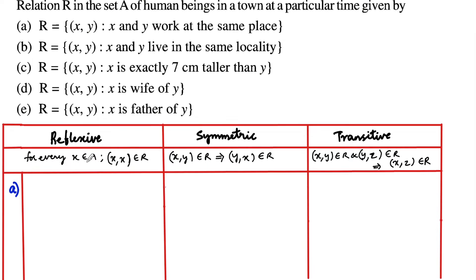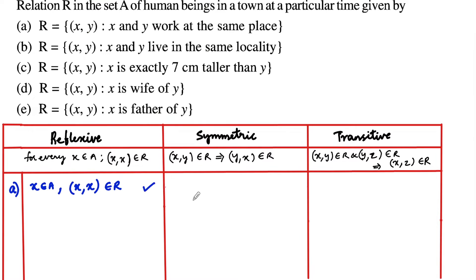Let us check for reflexive. The reflexive condition is: for every x belonging to A, (x, x) must belong to r. Suppose we consider an employee x where x belongs to A. We can say that he himself — (x, x) must belong to r — meaning both are the same person and they both work at the same place. So we can consider this is reflexive.